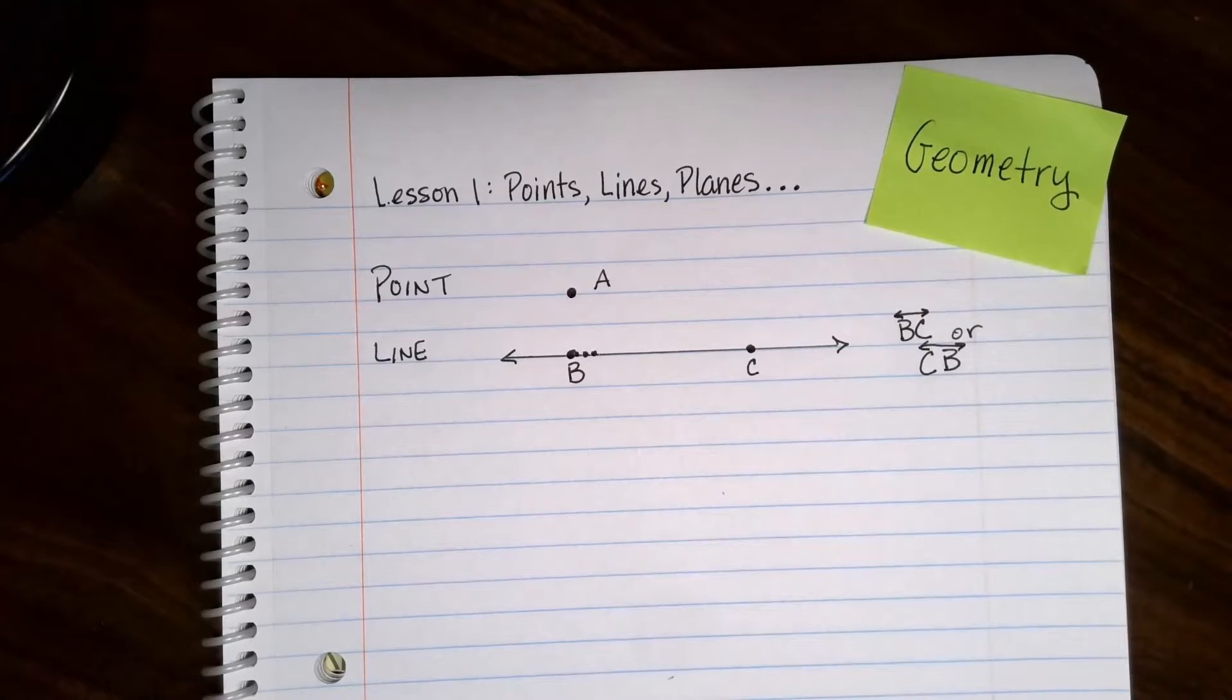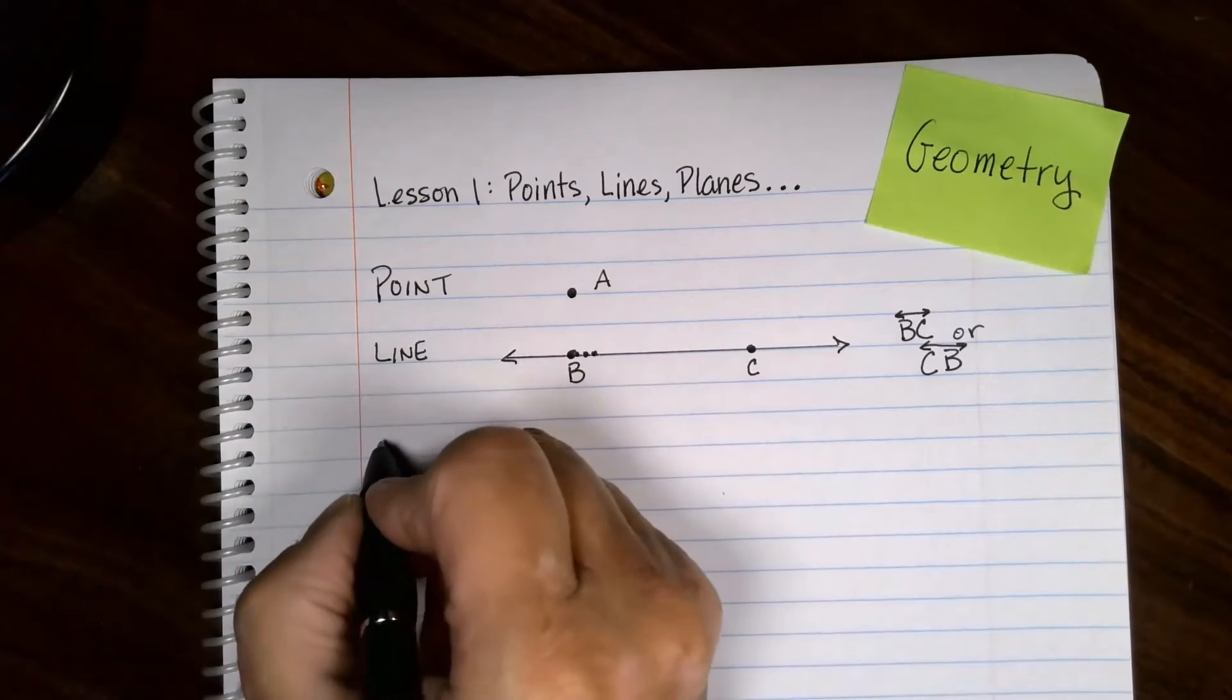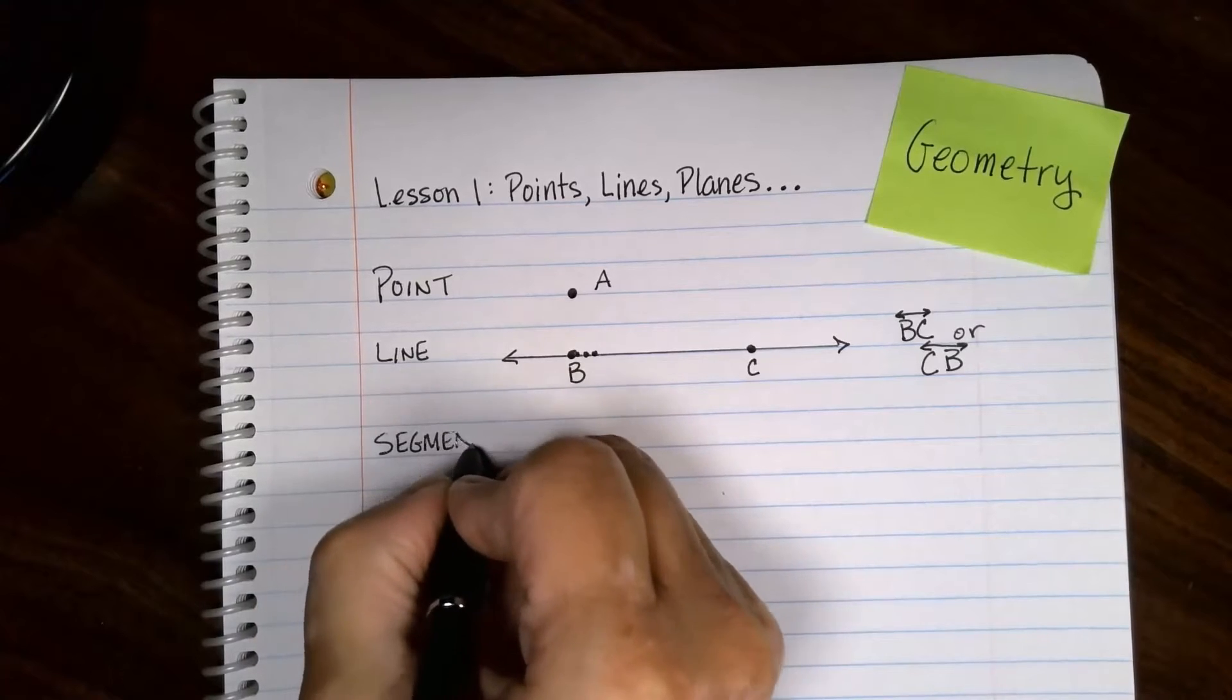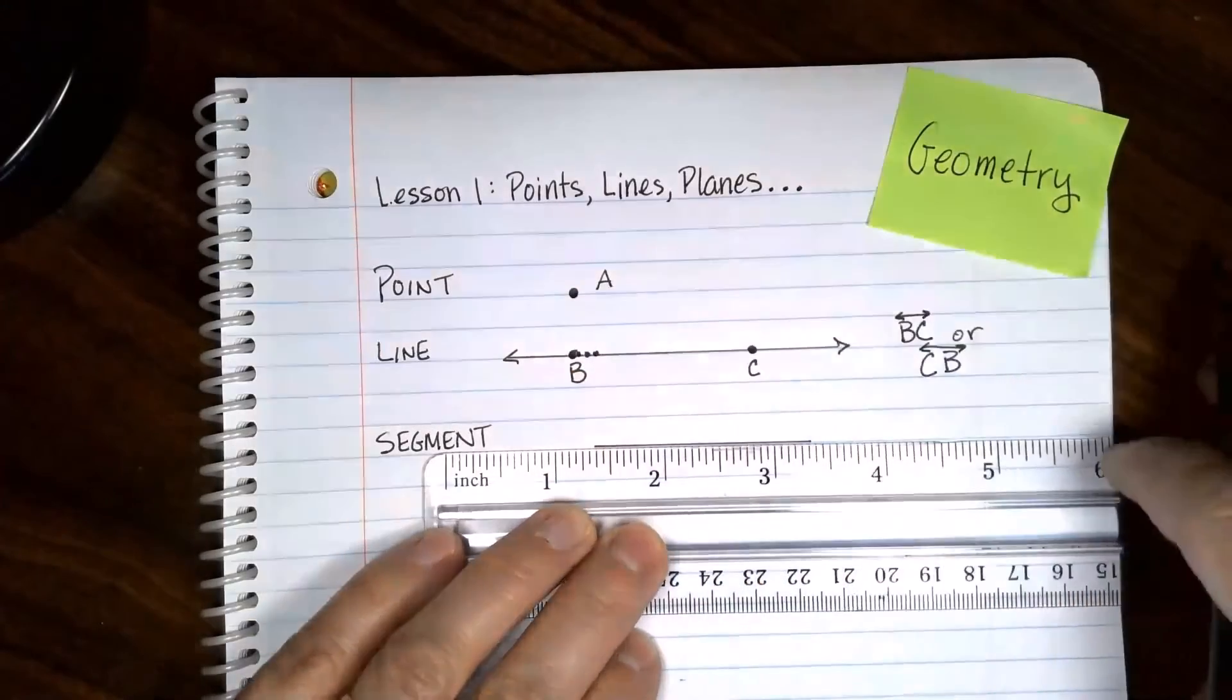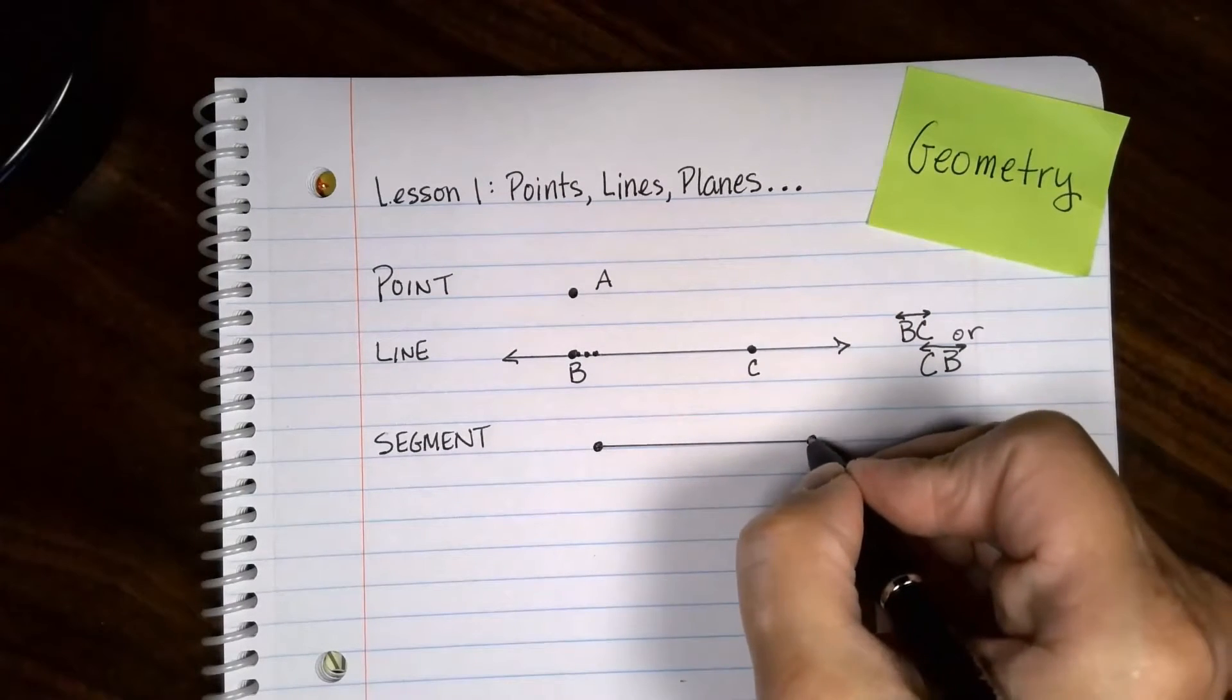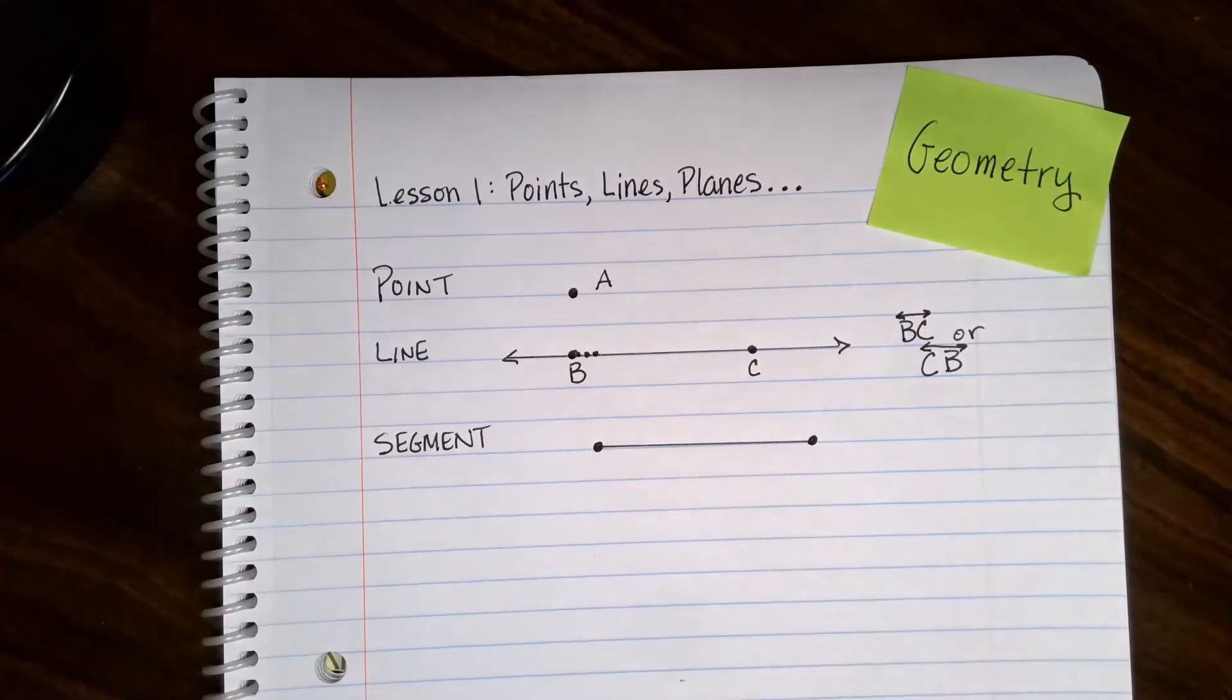Let's say you don't want to use the entire line going forever and ever in both directions, but you want to just talk about a piece of it. That would be called a line segment. It doesn't go forever in both directions. In fact, it has endpoints. It can go back and forth, so we just call them both endpoints.